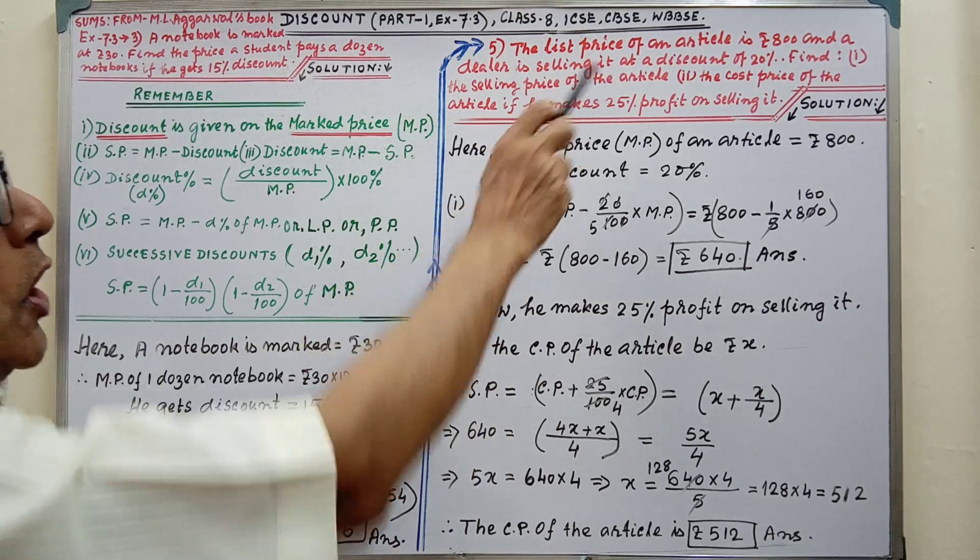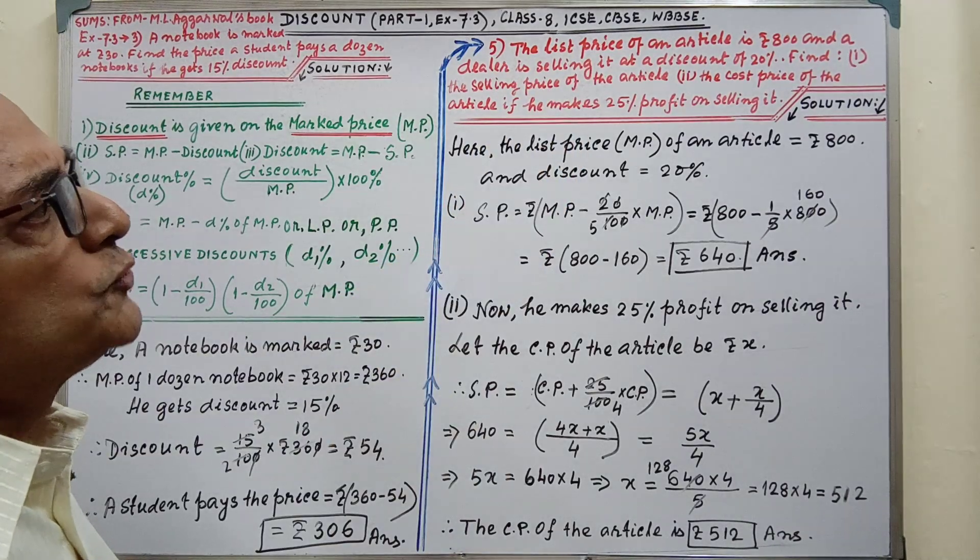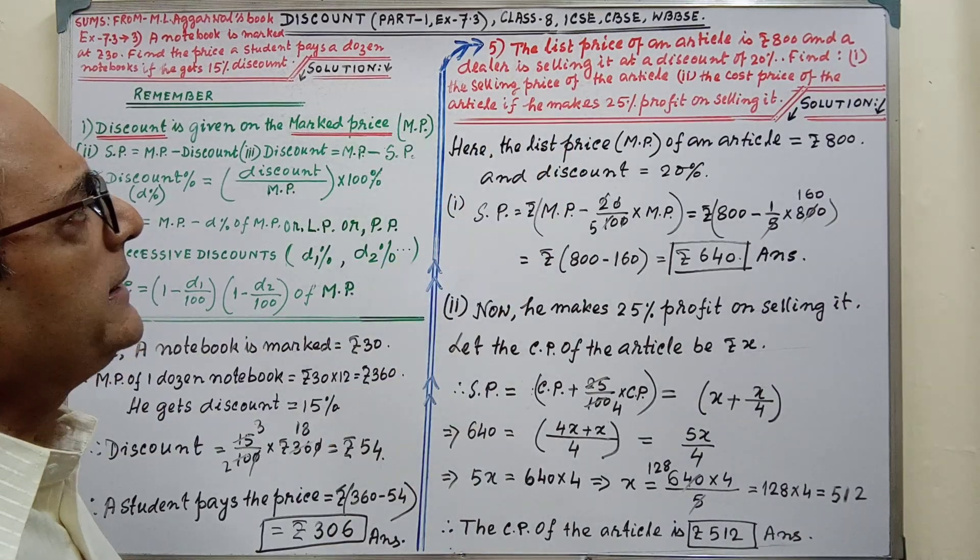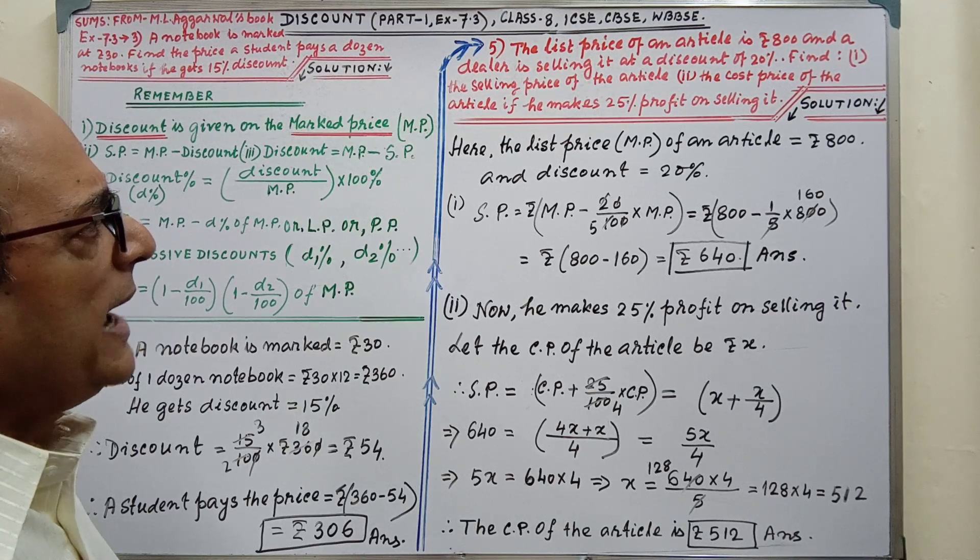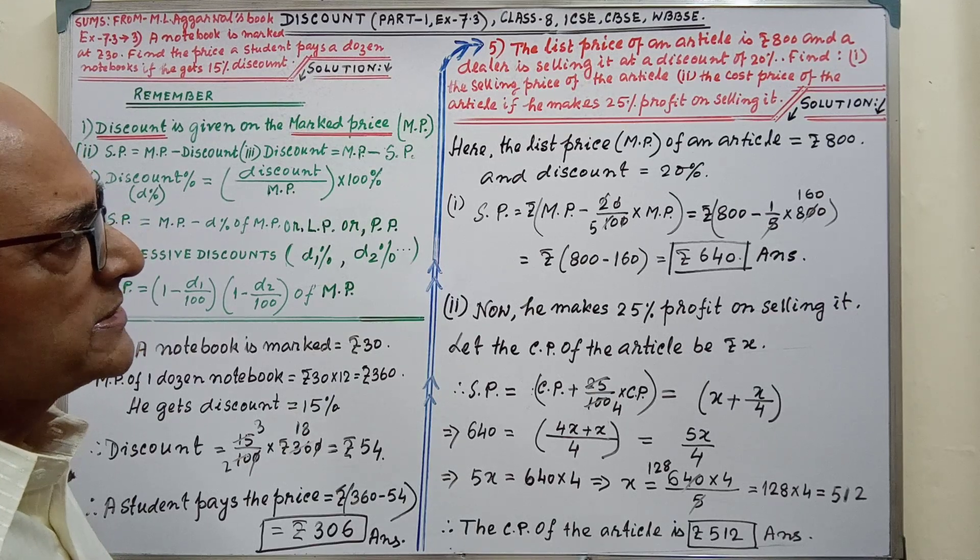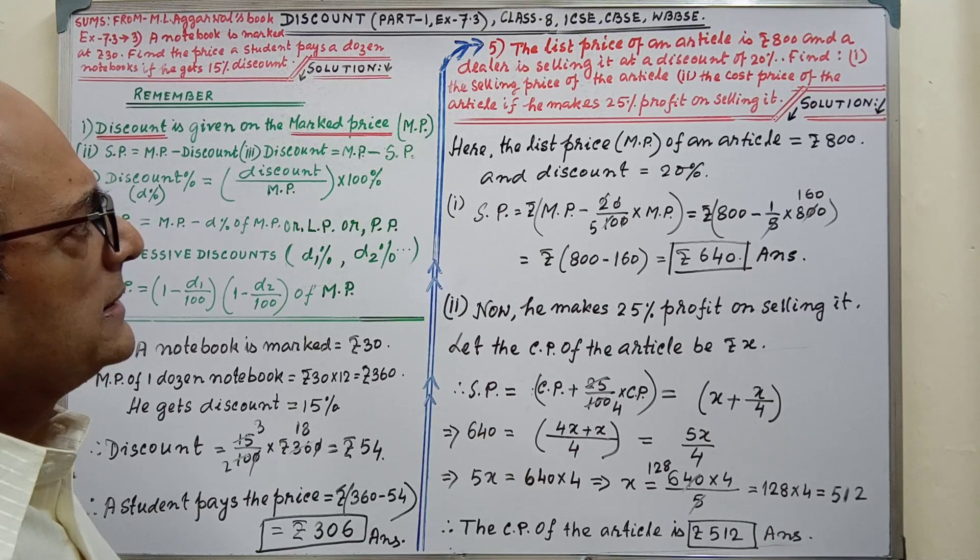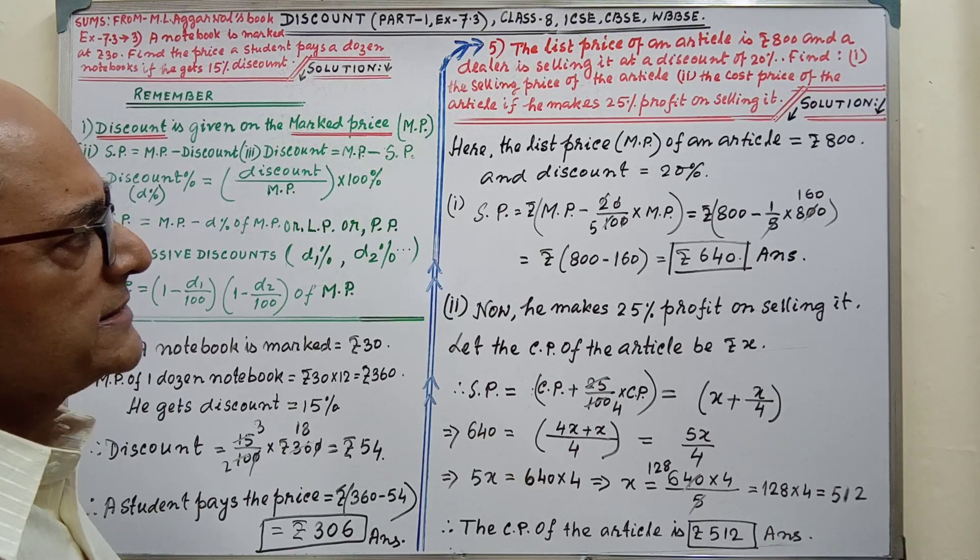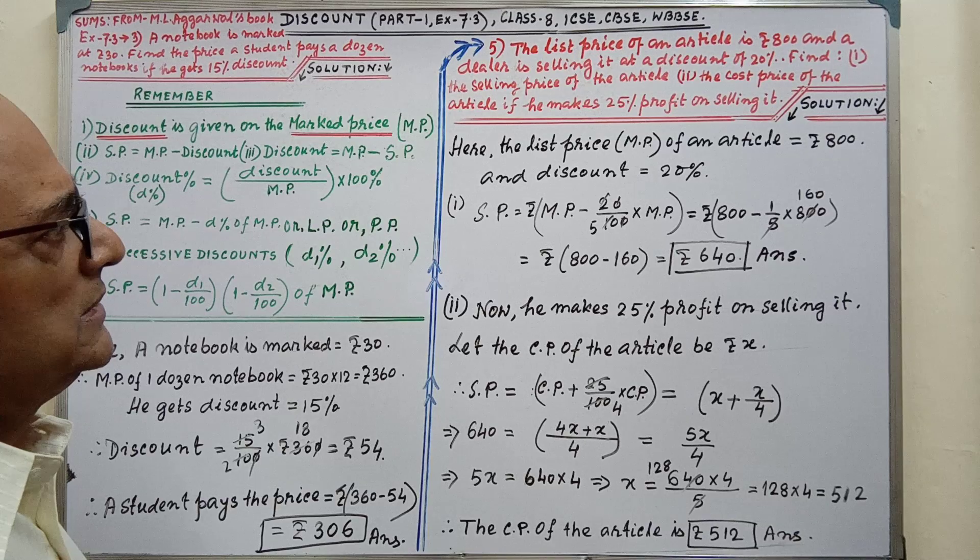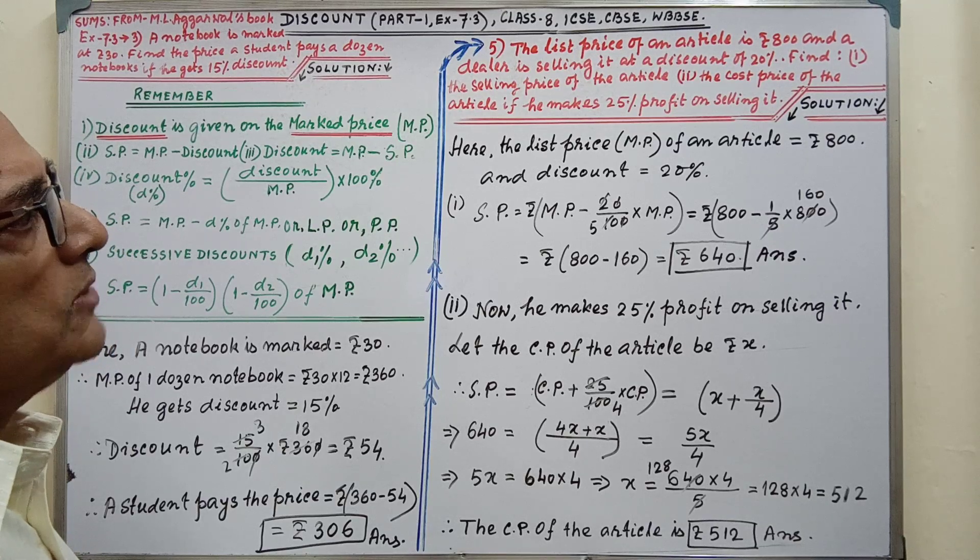A list price of an article is Rs 800 and a dealer is selling it at a discount of 20%. There are two parts: first, the selling price of the article, and second, the cost price of the article. Now pay your attention on the solution.